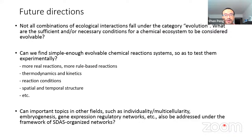As next steps, we may further explore under what conditions ecological interactions can combine to generate evolution-like dynamics, since there are both intriguing similarities and dramatic differences between evolution and ecological processes such as ecological succession. We can also try searching for simpler, experimentally testable evolvable chemical systems in a larger set of reactions. It would be fantastic to experimentally show that some abiotic systems can adaptively evolve without genetic polymers. Finally, the SIDAS theory may be extrapolated to other fields such as developmental biology and gene regulation research, providing a unified framework all the way from non-life to life.